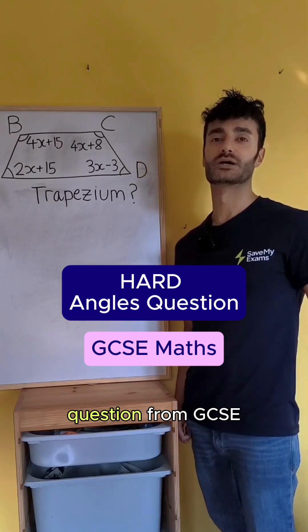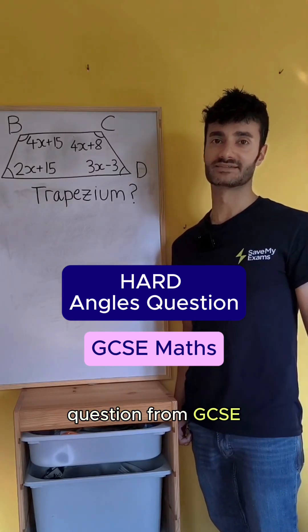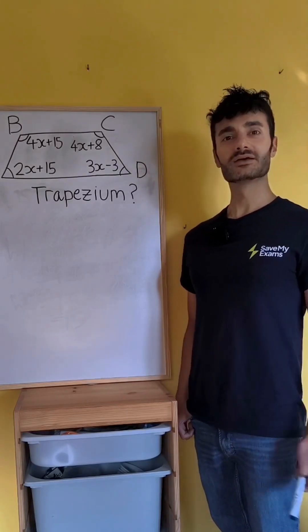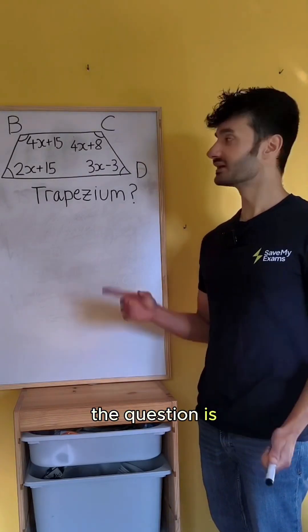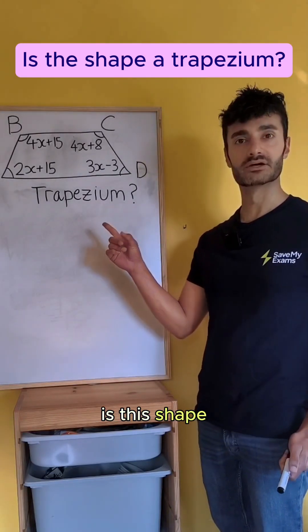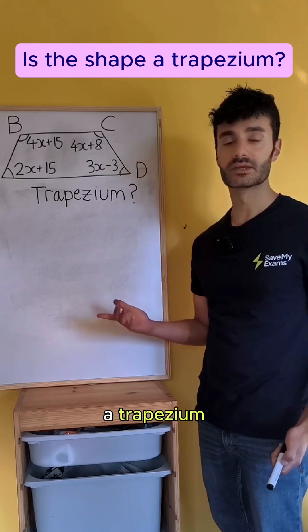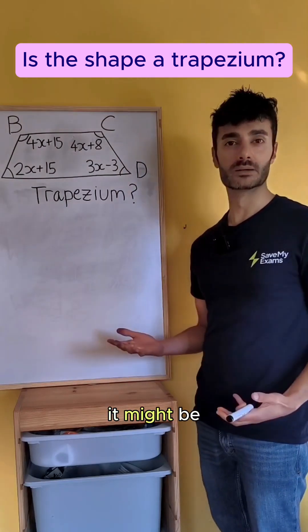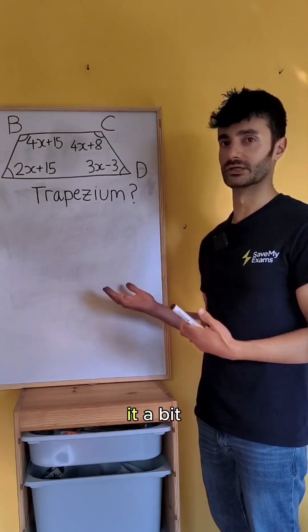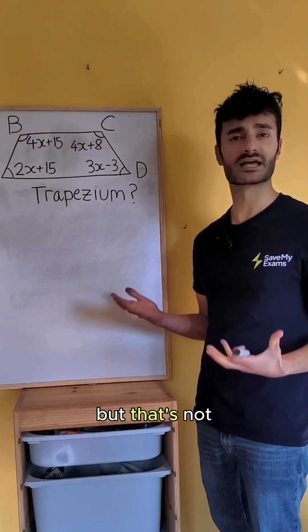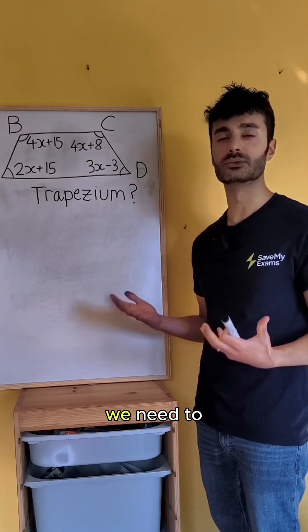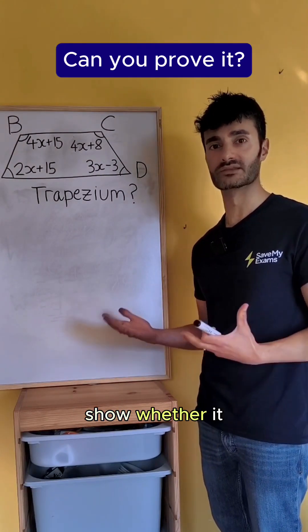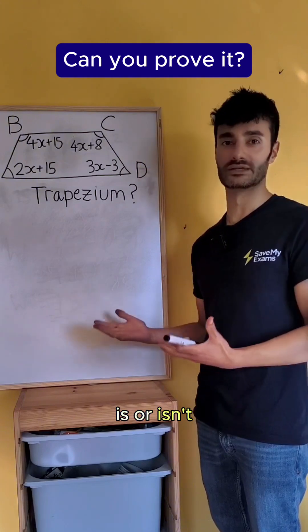Can you do this hard angle question from GCSE Maths? The question is: is this shape a trapezium? It looks like it might be because of how it's drawn, but that's not good enough. We need to show whether it is or isn't.